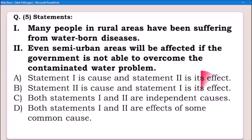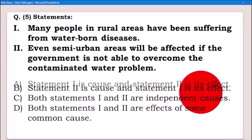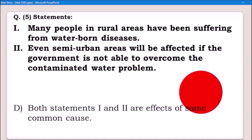Looking at statement one: many people in rural areas have been suffering from waterborne diseases — the water is not clean in rural areas. Using 'therefore': many people in rural areas have been suffering from waterborne diseases, therefore even semi-urban areas will be affected if the government is not able to overcome the contaminated water problem. Both statements share a common cause — contaminated water — so this is a common cause scenario.